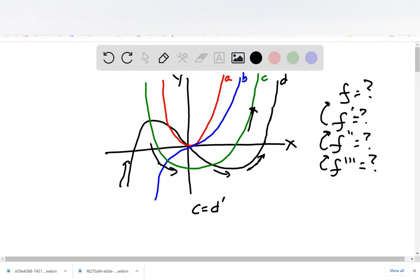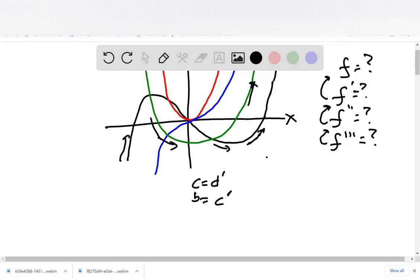Well, that looks like B, doesn't it? B is a very strong negative number. It comes up towards zero and then it goes up. It becomes a very strong positive number. So B is the derivative of C.